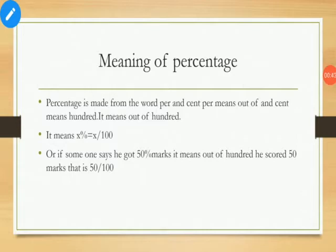Now the meaning of percentage. Percentage is made from the words 'per' and 'cent'. Per means out of, and cent means hundred — so it means out of hundred. So if it is given x percent, you should understand that out of hundred the person has got x. If someone says he got 50 percent marks, it means out of hundred he scored 50 marks, that is 50 upon 100.